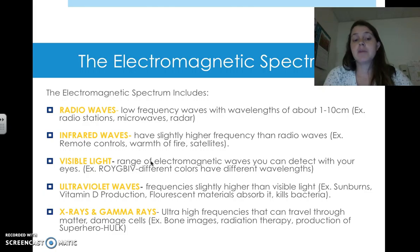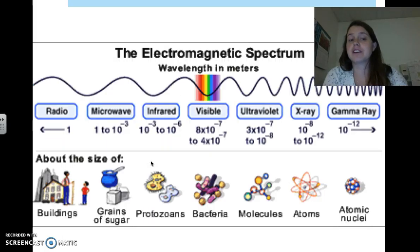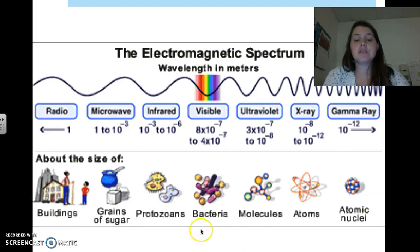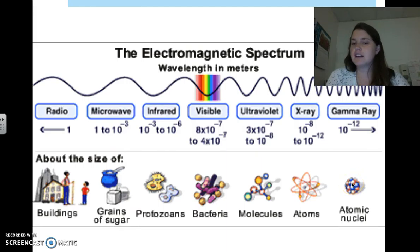X-rays and gamma rays are ultra-high frequency waves that can travel through matter. The problem is they damage cells. When you get an X-ray, you're doing some damage to your skin cells, but it's a necessary evil to determine if a bone is broken. In radiation therapy, gamma rays are shot at cancer cells in hopes of killing them, since they do damage cells — and of course, they're responsible for producing superheroes like the Hulk.